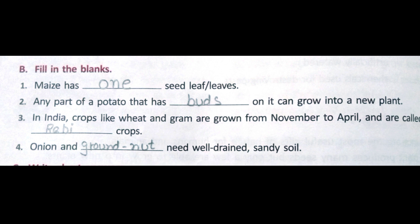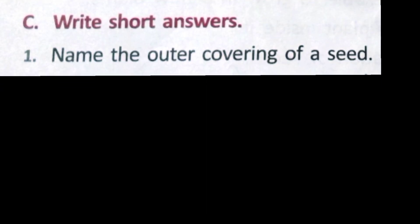Third: in India, crops like wheat and gram are grown from November to April and are called Rabi crops. Fourth: onion and groundnut need well-drained sandy soil. So the fourth answer is groundnut.